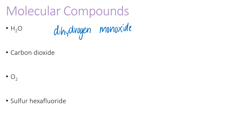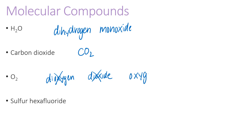Carbon dioxide: there's no prefix in front of carbon, which means just one, and 'dioxide' means two oxygens. Then we have O₂ — we would not call this dioxygen or dioxide. The correct name is simply oxygen, because it is a diatomic element. For sulfur hexafluoride, there's no prefix in front of sulfur, meaning just one, and hexafluoride tells us there are six fluorines.